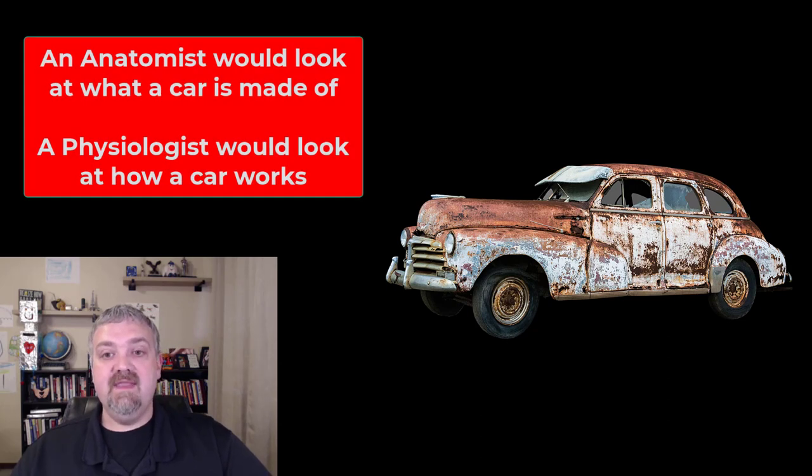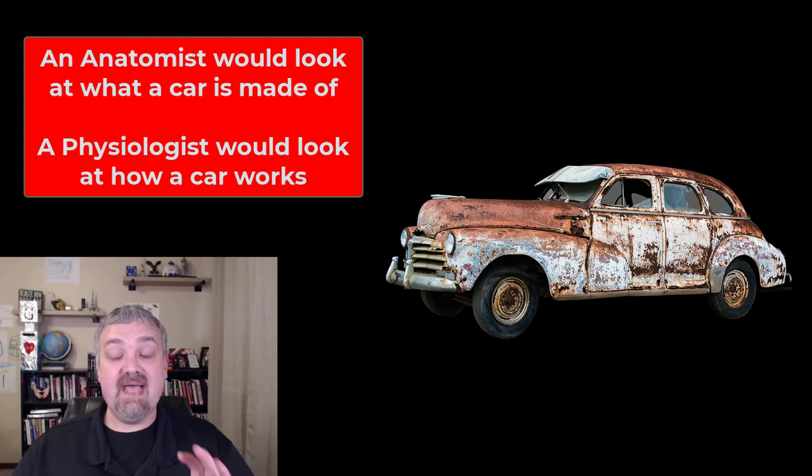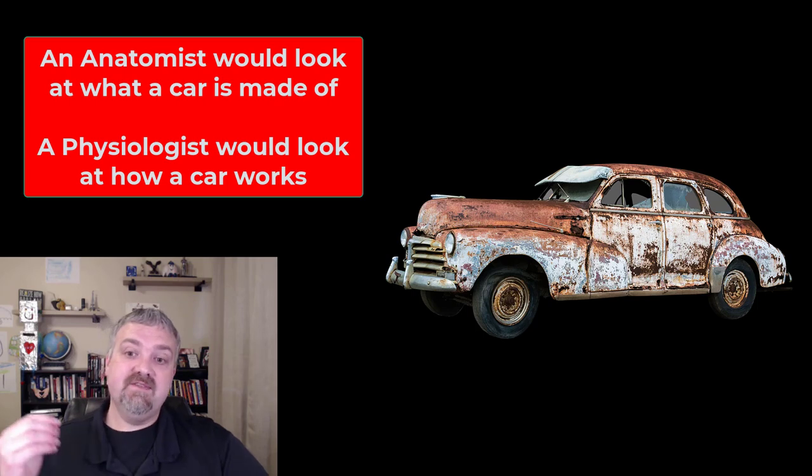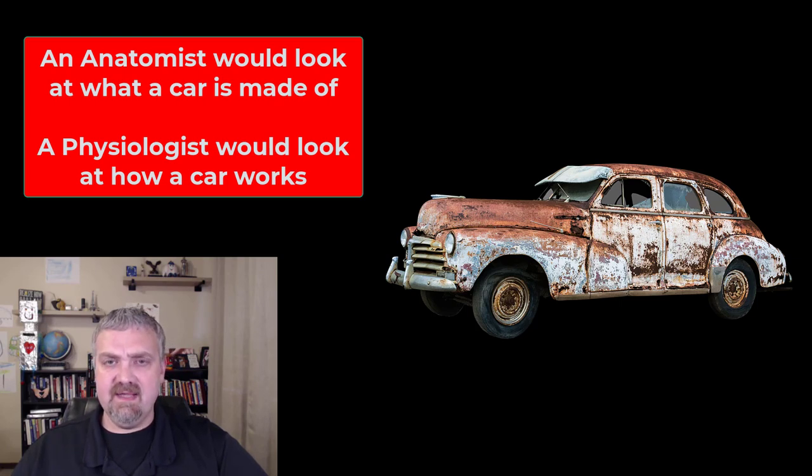So an anatomist would look at this car and they would care about the individual pieces, their measurements, how they're put together. Like the size of those tires, maybe the pressure in those tires, the structure of the engine. Whereas a physiologist would look at the same car and they'd want to know how it performs. What does it do? How does it turn? How quickly does it stop? How many horsepower are in that engine? How much weight can it carry?